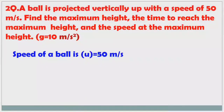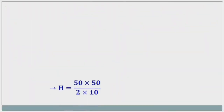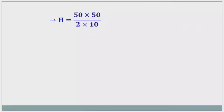Initial speed u = 50 m/s. Maximum height formula: h = u²/2g. Substituting: h = 50²/(2×10) = 2500/20 = 125 meters. That is the maximum height.